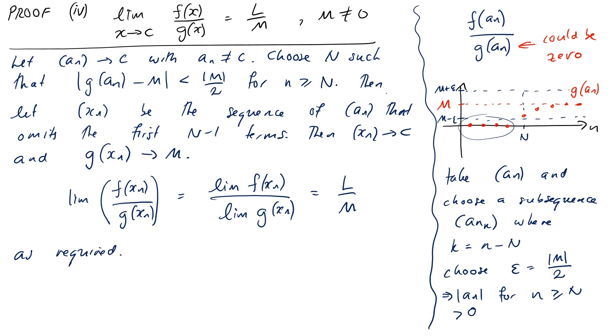The other two cases are much like case two. Case four — the quotient — is probably the most tricky because of that zero issue, but essentially we haven't done very much other than frame the problem, because the actual work of proving these things was done when we proved the algebraic limit theorem for sequences.